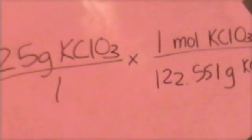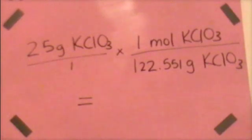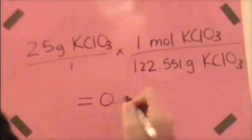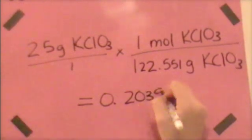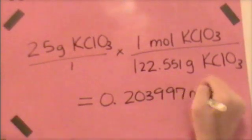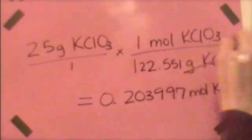Now, if your number is a little different, don't worry. Most periodic tables have a little variation. When you multiply that out, you should get something around 0.203997 moles of KClO3, because the grams cancel out.